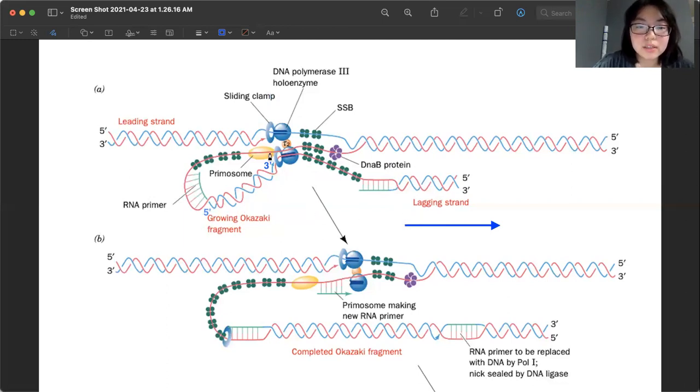But yeah, so when we focus on the lagging strand, again, this red strand here will be the parent strand for lagging strand. And as it goes this way, so helicase will unwind this way, like I said before, right?